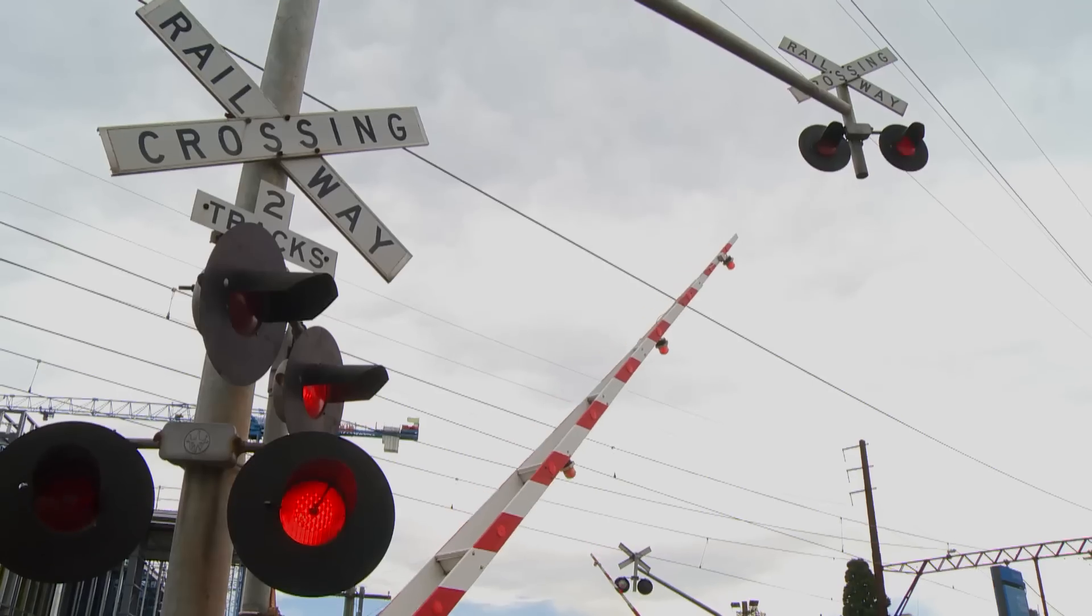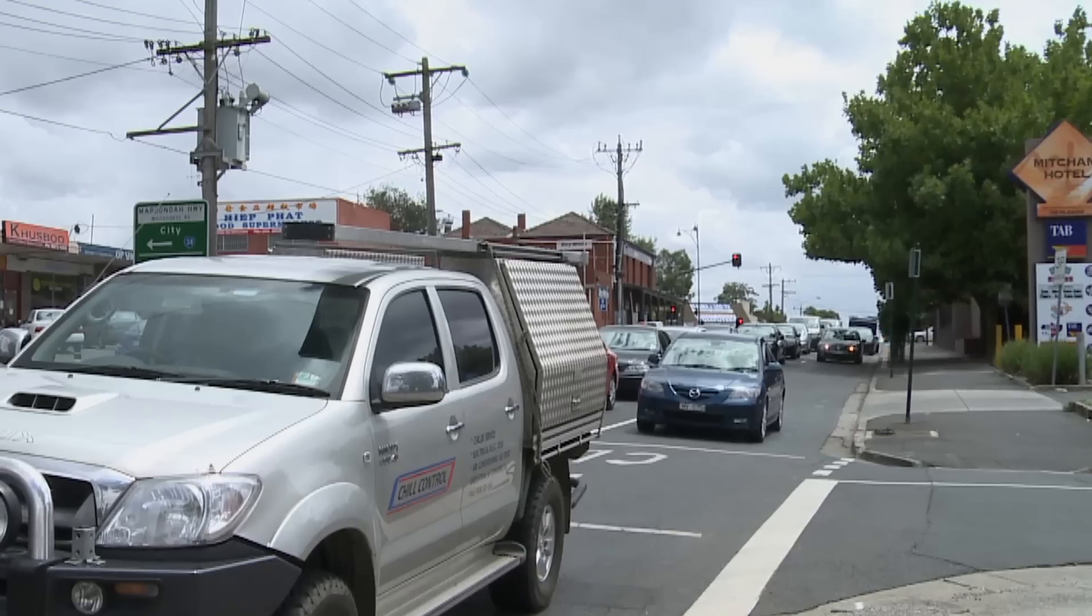Removing level crossings allows more trains to run without road traffic being stuck behind boom gates.